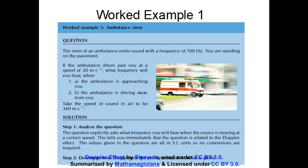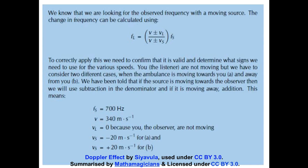Notice that V_S is negative 20 m/s for part (a) because the ambulance is moving towards the listener. For part (b), the ambulance is moving away, so V_S is positive 20 m/s. Since V_L is zero in both cases, the formula simplifies: for (a) F_L equals V over (V minus V_S) times F_S; and for (b) F_L equals V over (V plus V_S) times F_S.